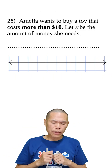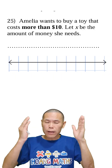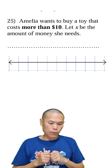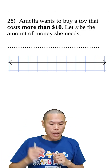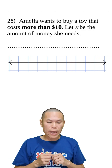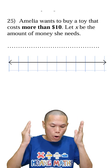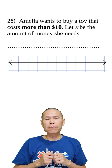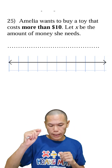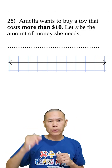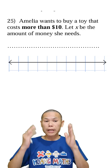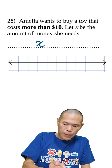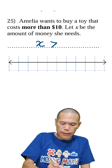We need to write an inequality for the situation and then plot it on the number line. Question number 25: Amelia wants to buy a toy that costs more than $10. So more than $10 means X is greater than 10, because X represents money. So X is greater than 10.